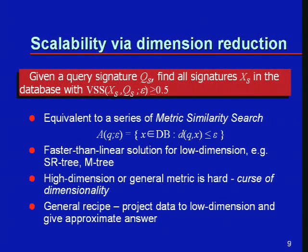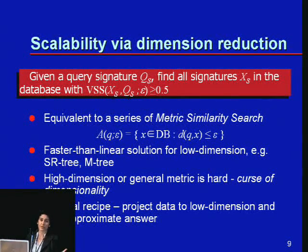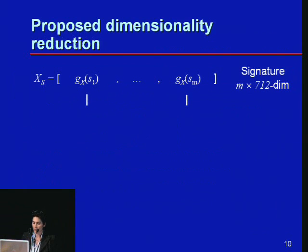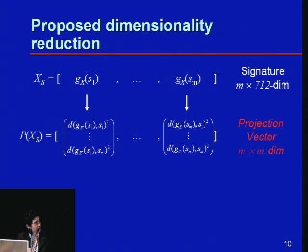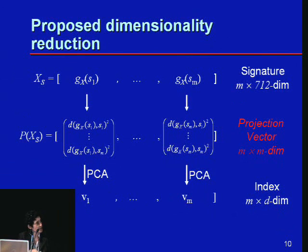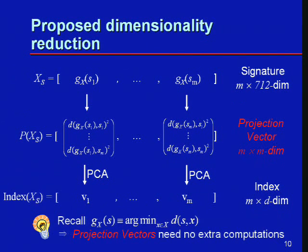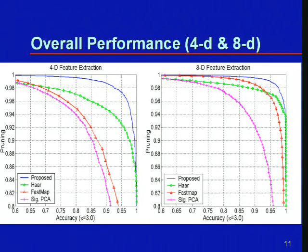We had to do some sort of dimensionality reduction. Most people think of principal component analysis (PCA), but this problem is referred to in the technical literature as the curse of dimensionality, and PCA alone didn't work directly. After some fiddling around, we came up with a two-step process: first a projection vector to project the signature into something lower dimensional, then apply PCA to get something even lower dimensional. The beauty was that we didn't have to compute anything new because we had already computed these quantities earlier. Now we have a compact, small signature vector representing each video.